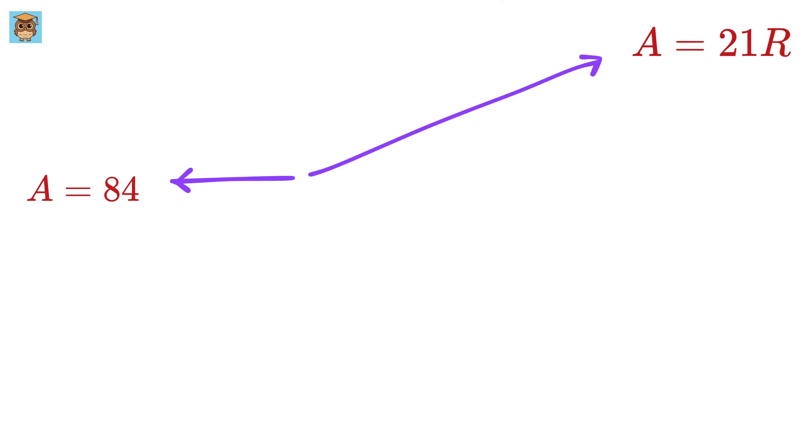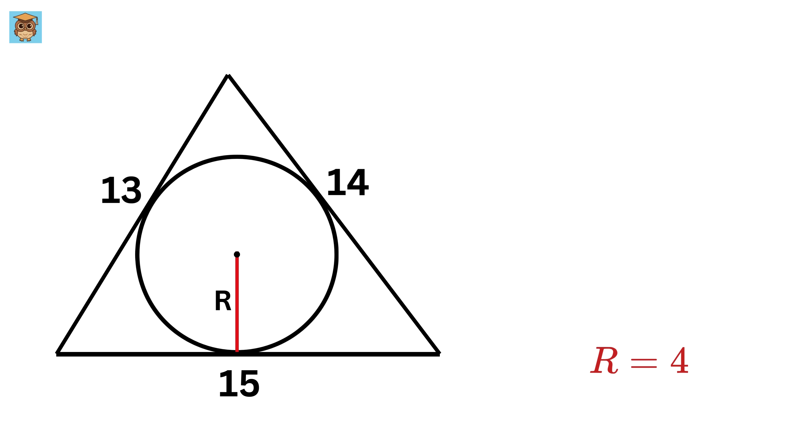Now we only have to equate both of them to get 21R equals 84 or R equals 84 over 21 or 4 units, and that's it. Finally, finding the area of this circle is super easy. It will be pi times R square, or 16 pi square units.